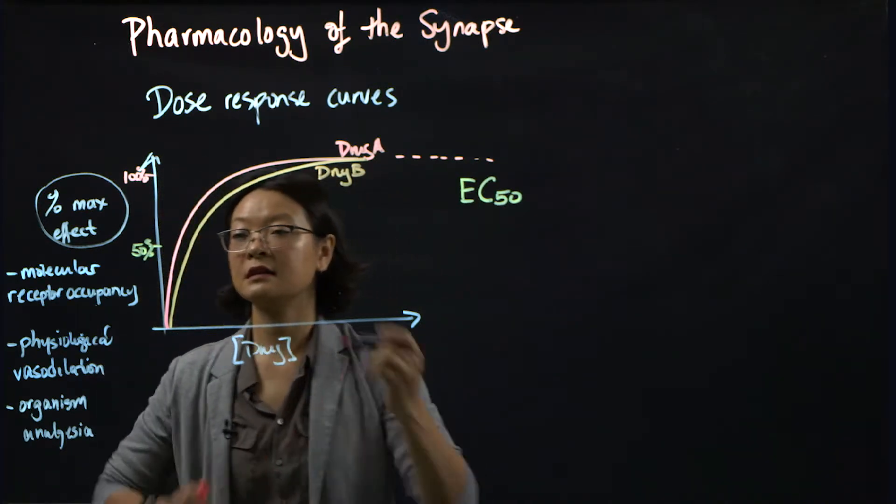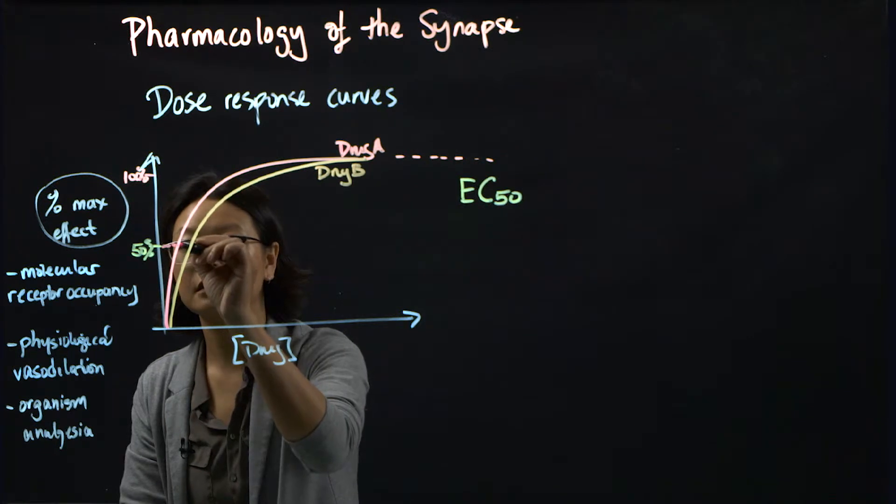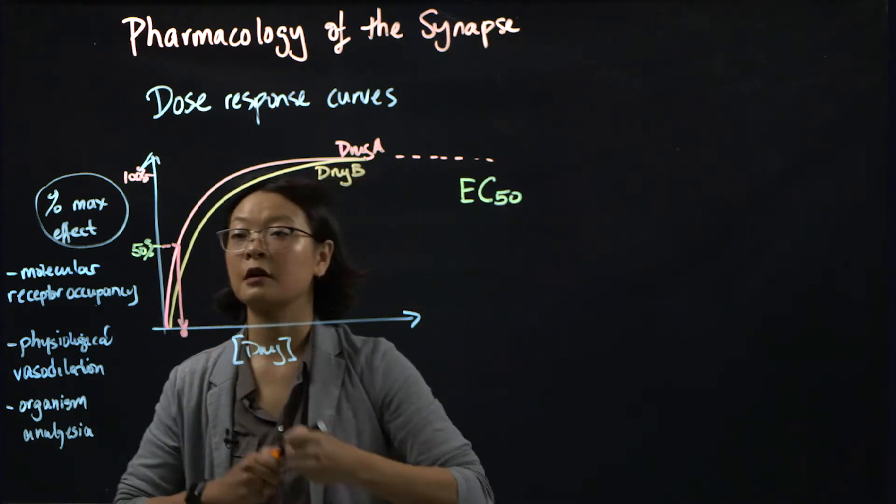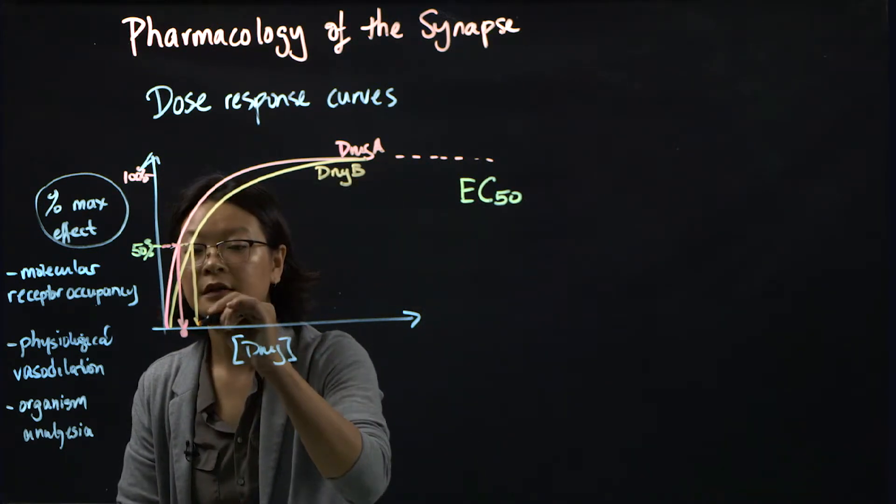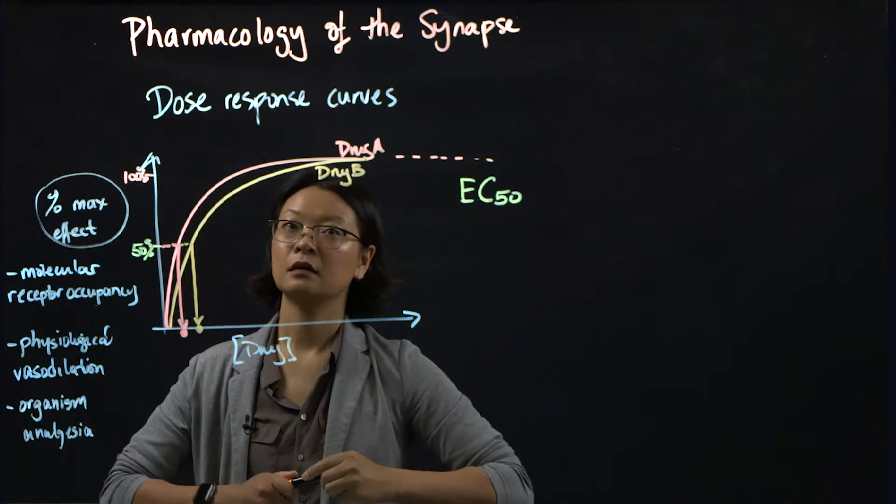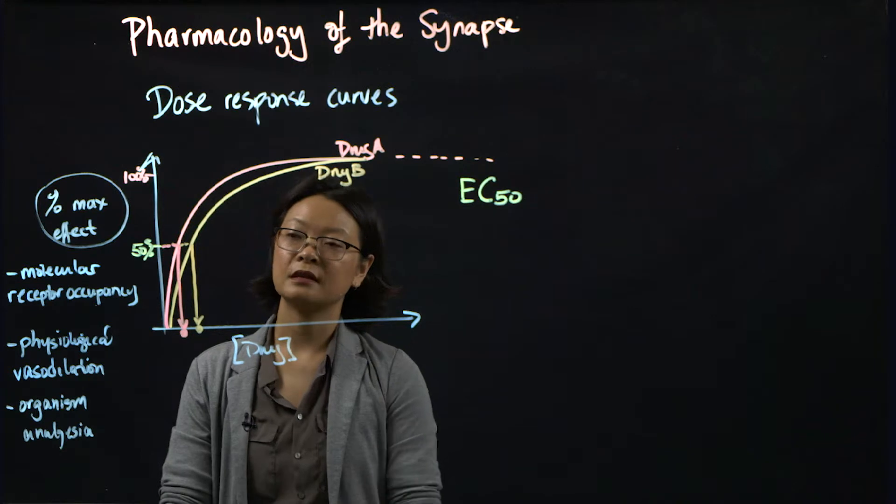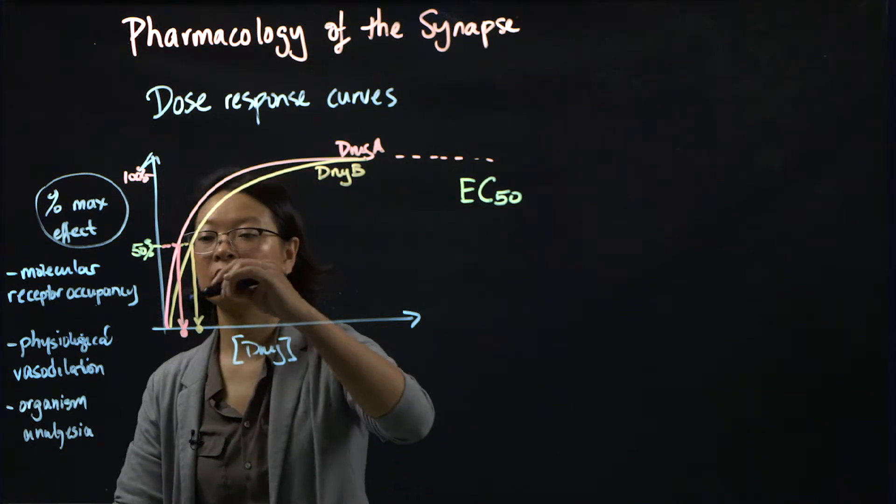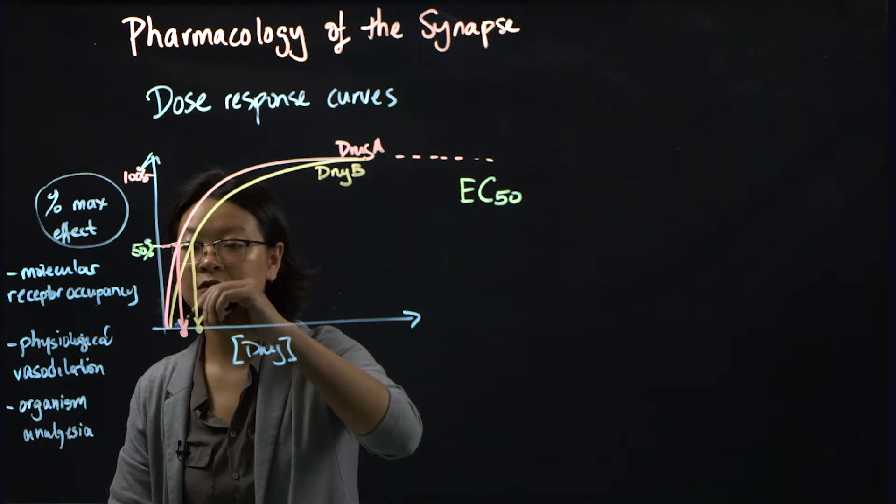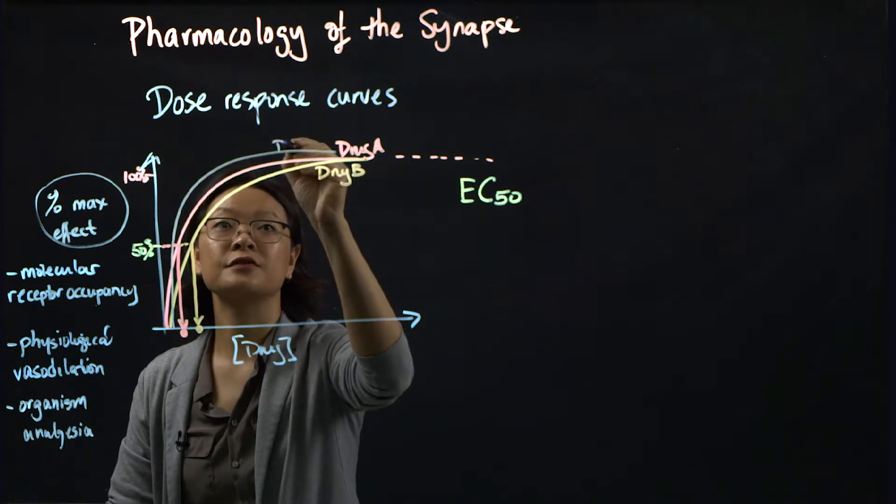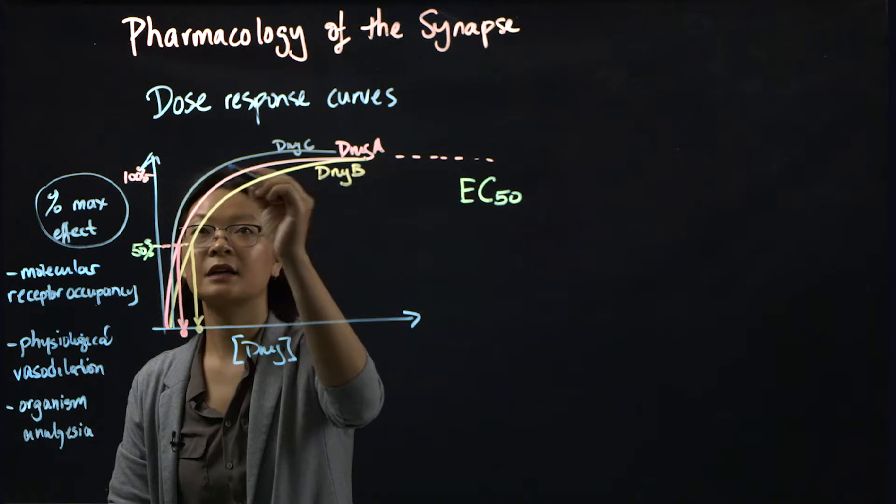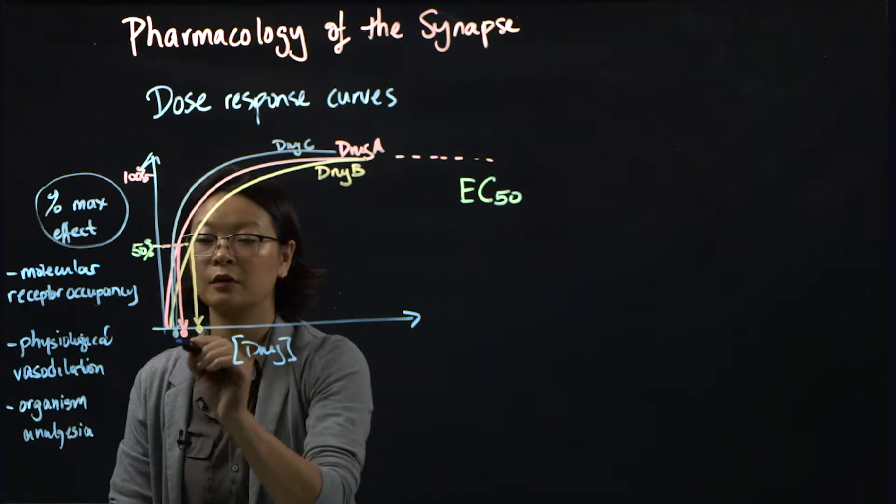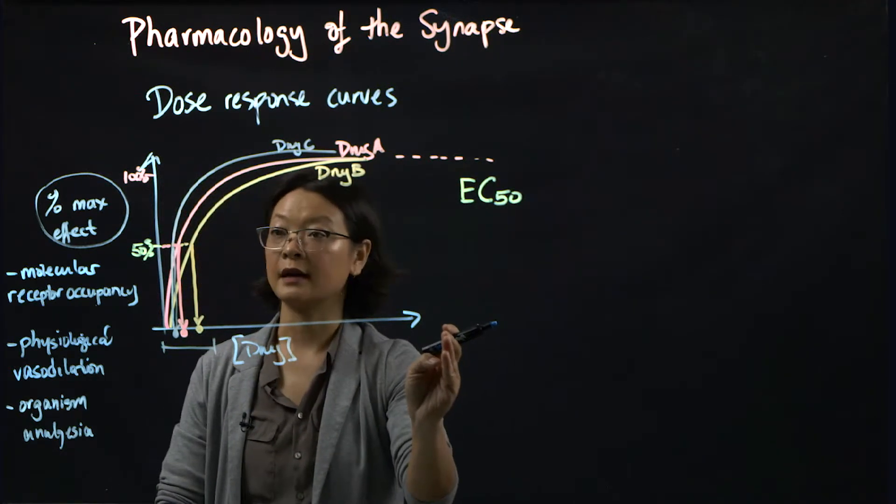So the EC50 for drug A would be this concentration. And then the EC50 for drug B would be this concentration. Now the problem with EC50s on hyperbolic curves is that most drugs produce a hyperbolic curve. And so you can have a lot of comparisons between drugs where you have something like that. So we call this drug C. It's actually fairly difficult to estimate where 50 percent is. And you can see here that we're working with a very small range of the whole x-axis.